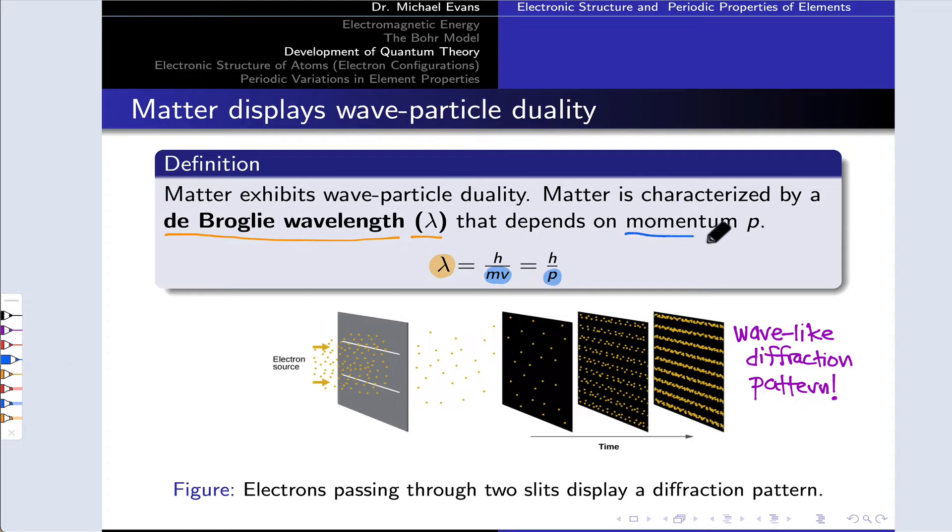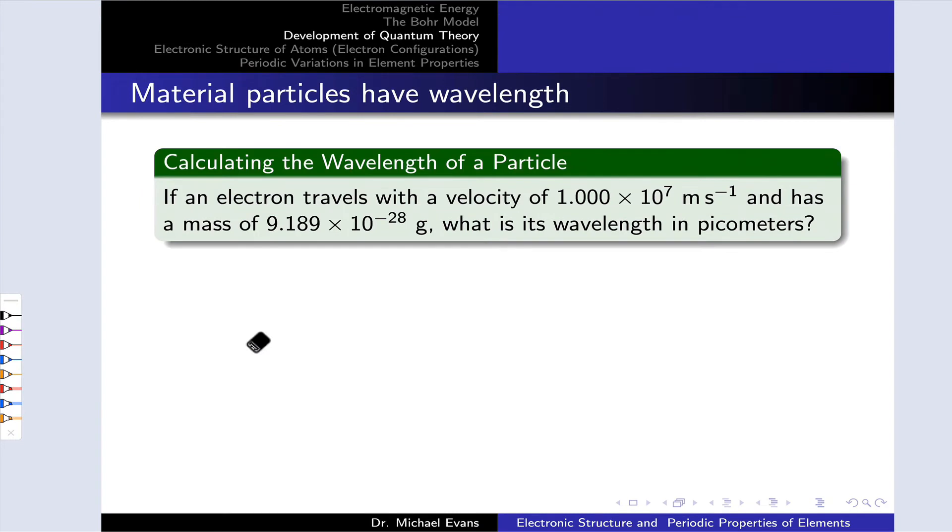So we can calculate the wavelength of a particle, the wavelength of any piece of matter, using this equation. Let's get some familiarity with the de Broglie wavelength by calculating the wavelength of an electron with the parameters that you see on this slide.